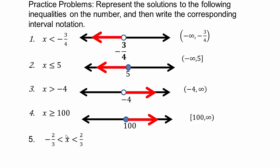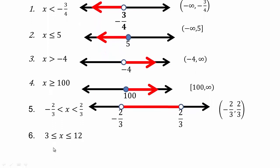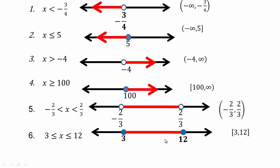For everything between negative two-thirds and two-thirds, both not included: there are holes at both endpoints and everything in between is included. The interval notation is open bracket at negative two-thirds, comma, open bracket at two-thirds. Don't forget the comma. For 3 less than or equal to x less than or equal to 12: plot 3 and 12, both included with everything in between. The interval notation is square bracket 3, comma, 12, square bracket.